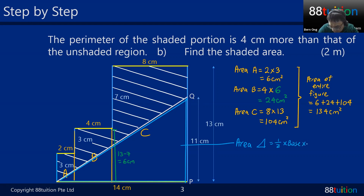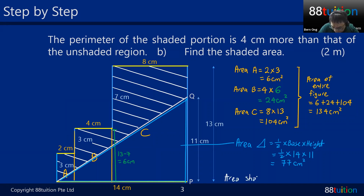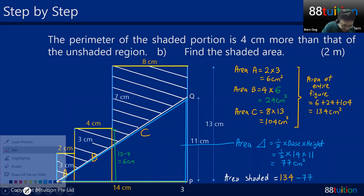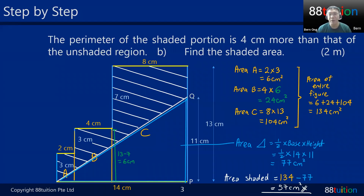We need to subtract the area of the unshaded triangle. Area of triangle = ½ × base × height = ½ × 14 × 11. Press your calculator: 7 × 11 = 77 cm². So the shaded area = entire figure − triangle = 134 − 77 = 57 cm². That's your answer for part B. This is PSLE 2021 Paper 2 Question 12.